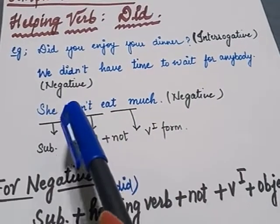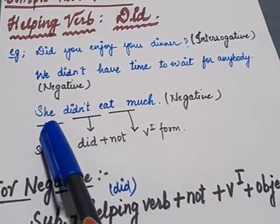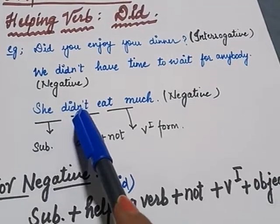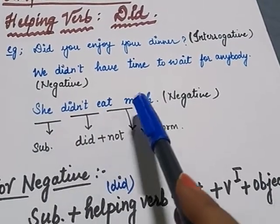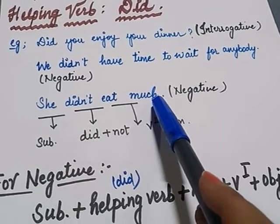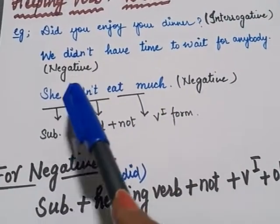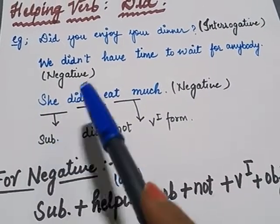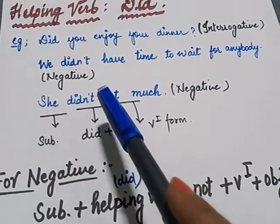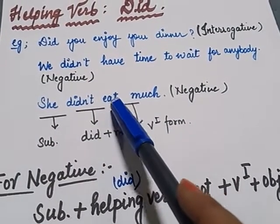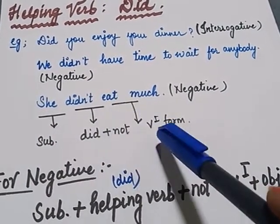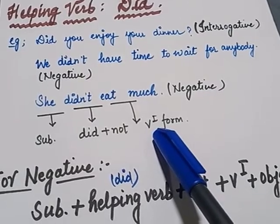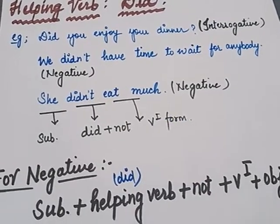See another example: 'She did not eat much.' Again: 'she' is the subject, 'did not' is the helping verb with negation, then 'eat' is the verb first form. The object is missing in this sentence.